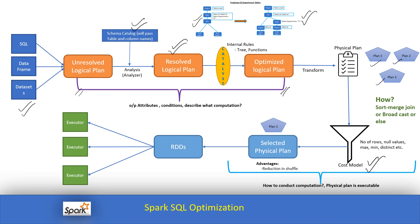For example, if table A has less data and table B has a large dataset with billions of records, the cost model will decide that a broadcast join is the best option. If both tables are large, a sort-merge join may be the better option. The selected physical plan is executable. Once Plan 3 — broadcast join — is selected, Spark creates an RDD, distributes the data, and pushes it into the executors, which then perform the operation.